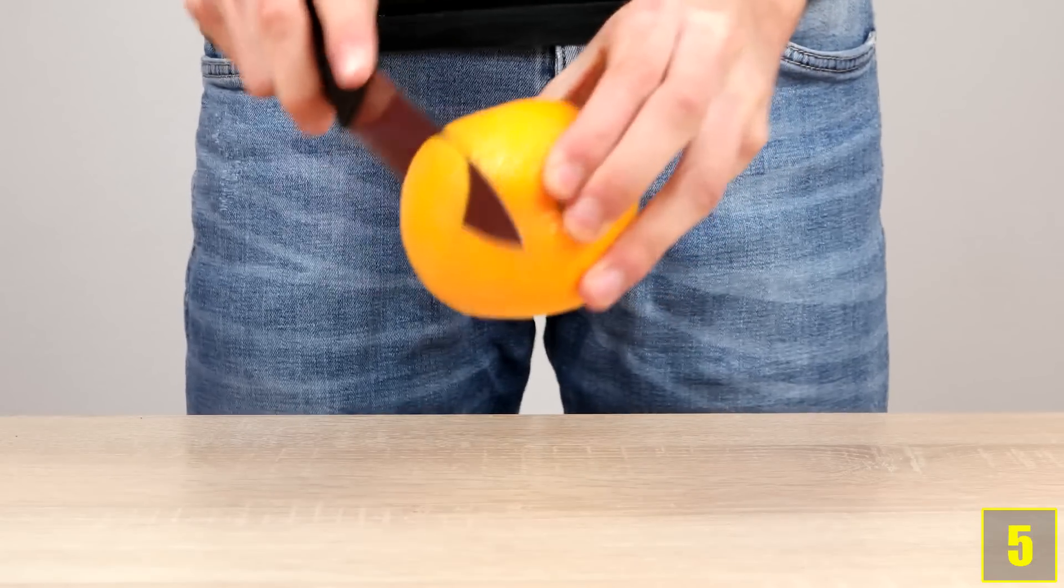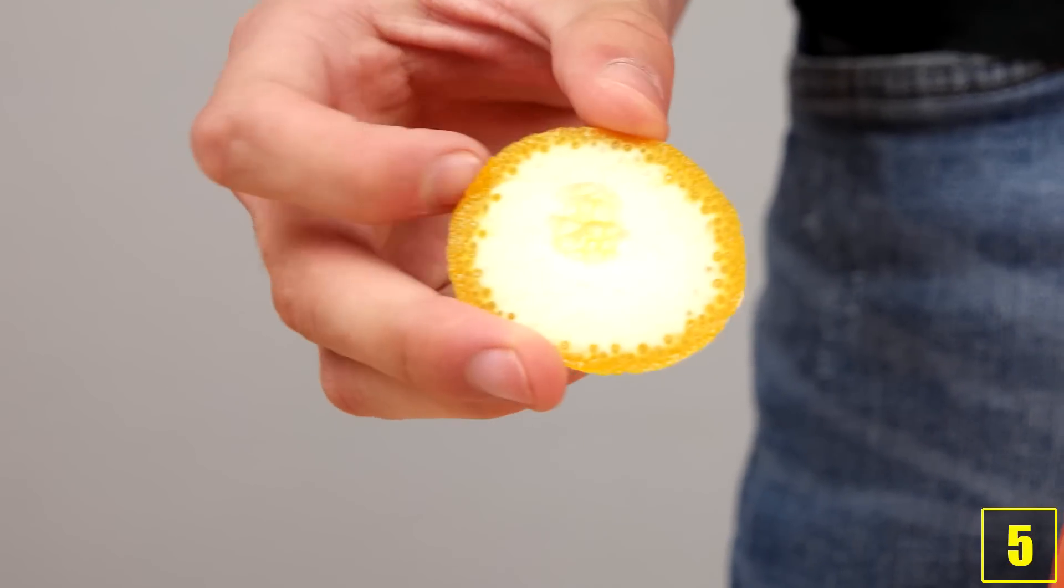And number five. Cut out some orange peel with a knife, press it onto the balloon and see what happens.